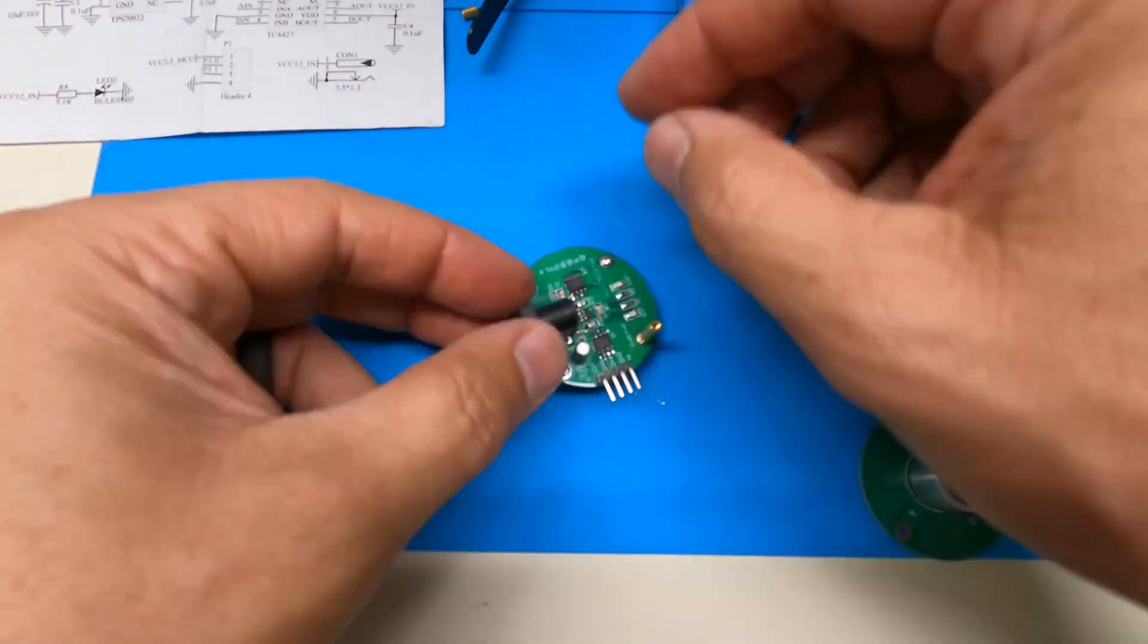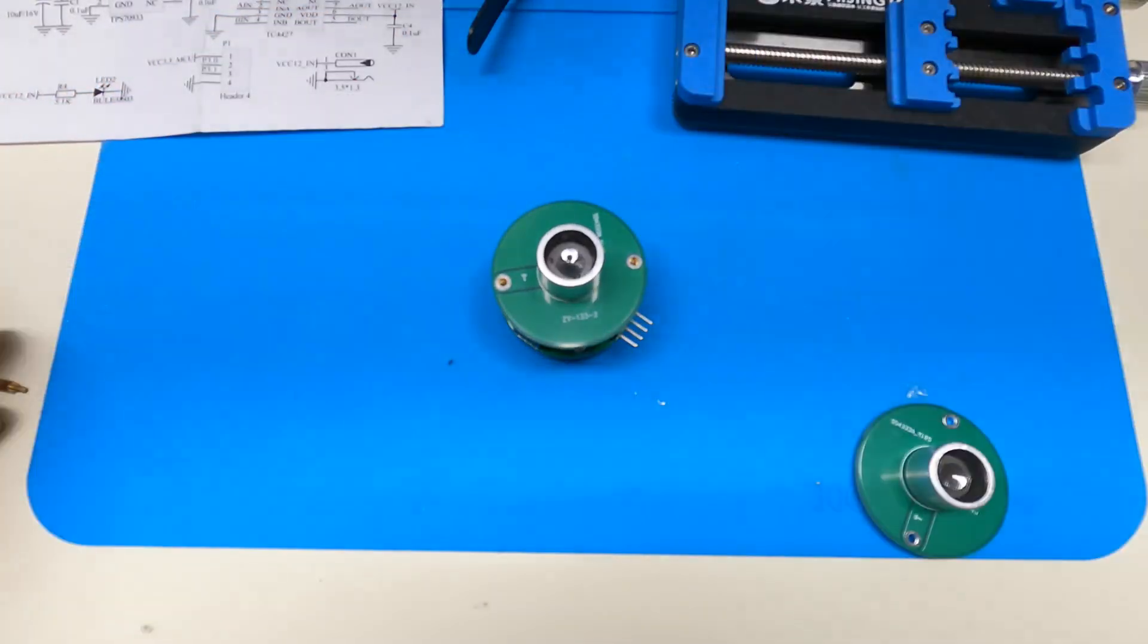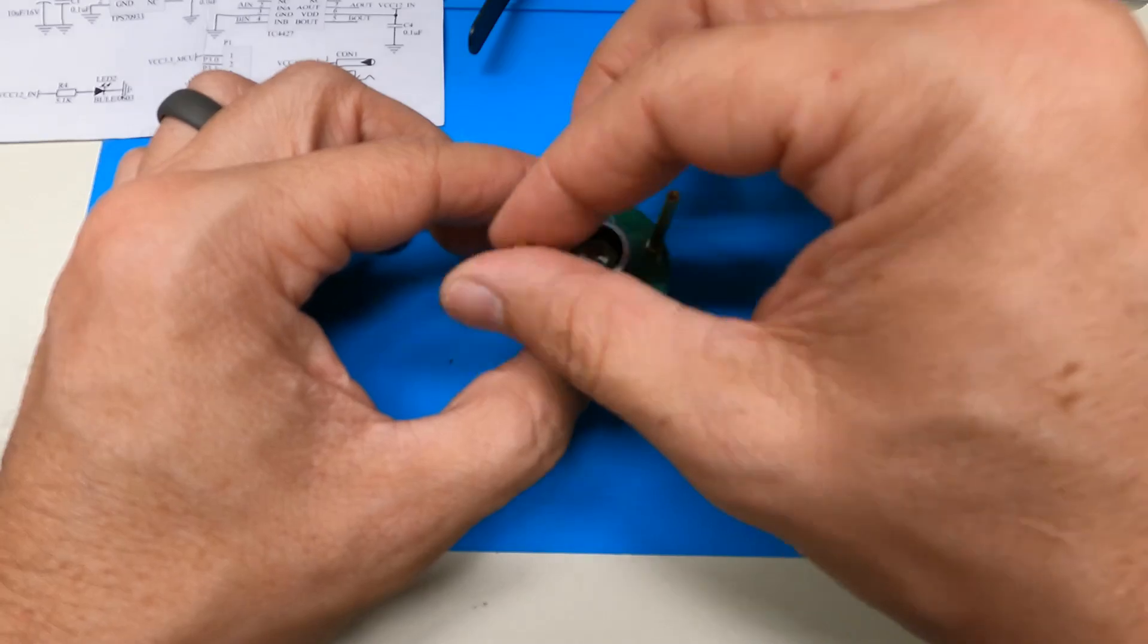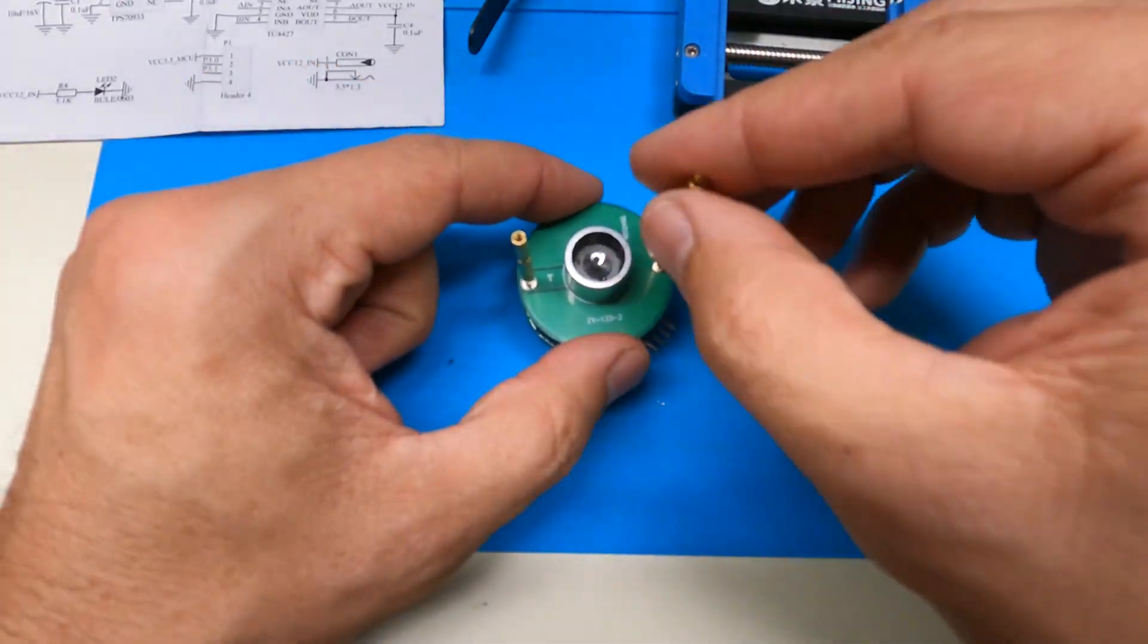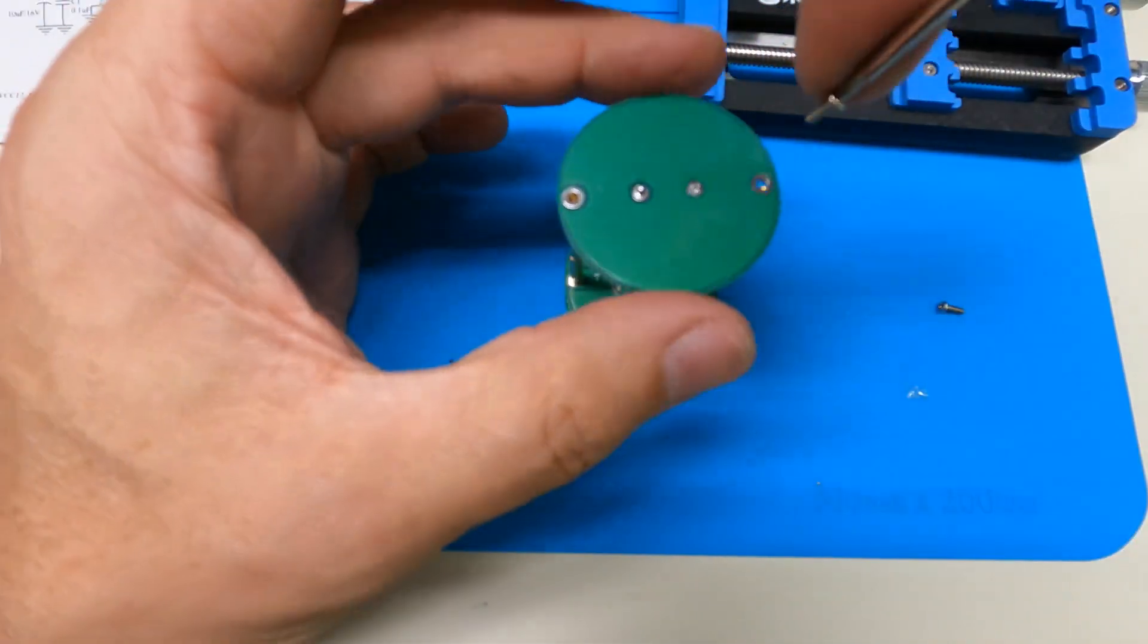The mechanical assembly is pretty simple. The smallest standoffs are used at the bottom as feet. The mid-sized standoffs are used between the two bottom boards, and everything else is used between the two transducers. They say the polarity of the transducers is not important, and they can be installed in either direction.